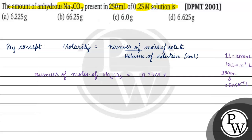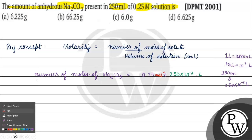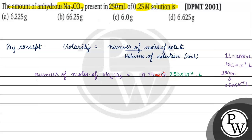We multiply it, which gives 10 to the power minus 3 liters. Molar means moles per liter, so the liters will cancel. Moles per liter into liters — 0.25 into 250 into 10 to the power minus 3, which gives 0.25 into 0.25, equals 0.0625 moles. Now the moles are found.